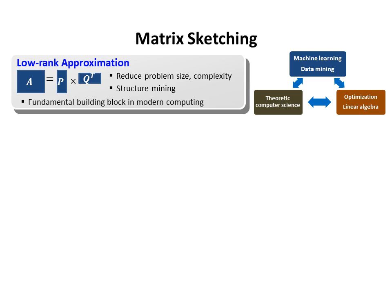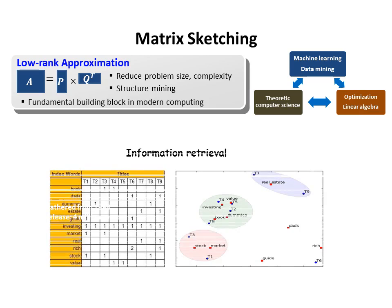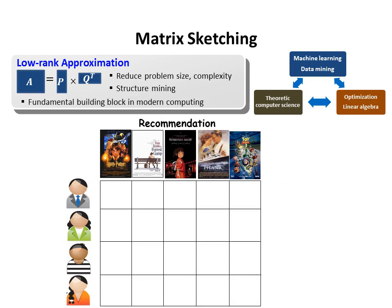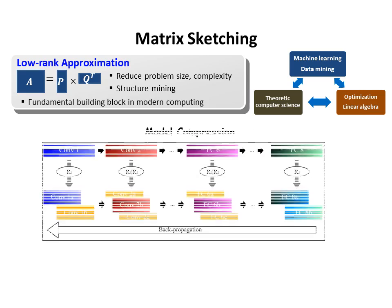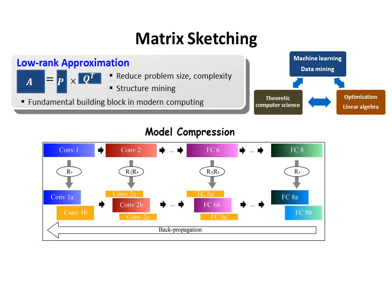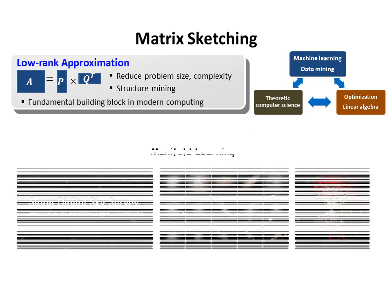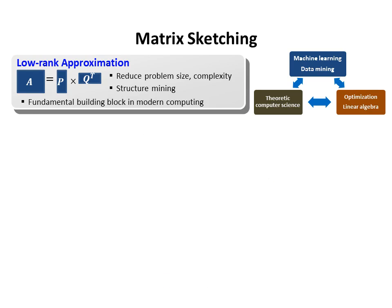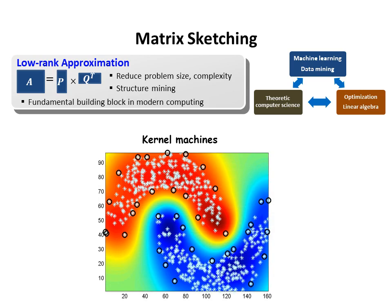Examples of low-rank decomposition include information retrieval, recommendation systems, model compression in deep learning, manifold learning, and kernel methods.